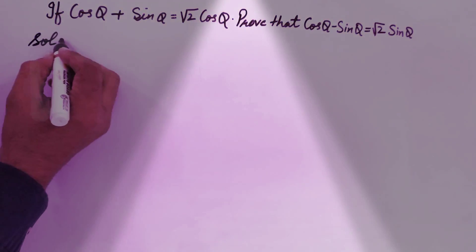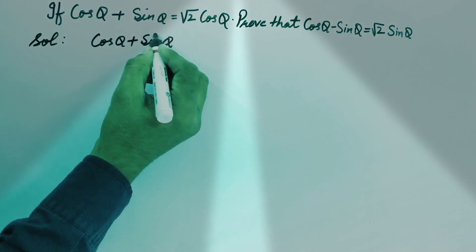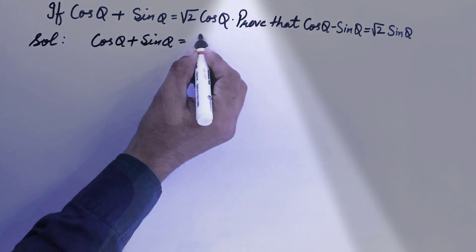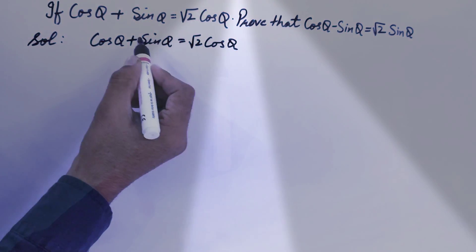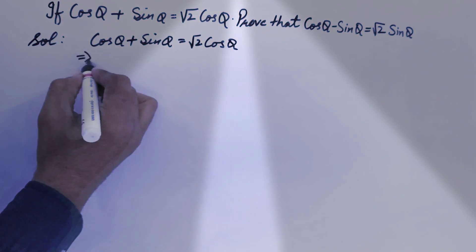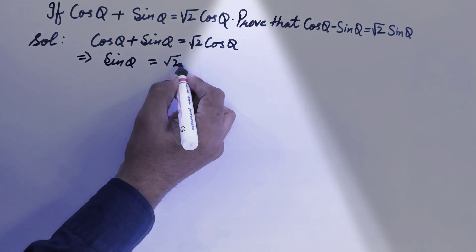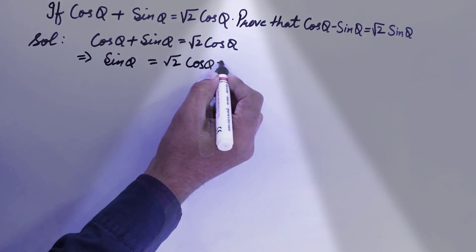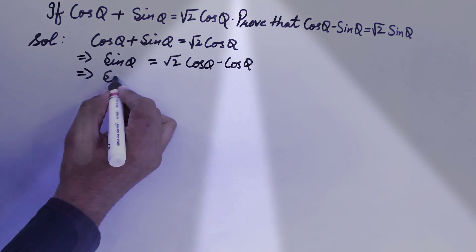Let's start from what is given. It is given to us that cos θ + sin θ = √2 cos θ. We will transpose cos θ to the right-hand side, so it becomes sin θ = √2 cos θ - cos θ.